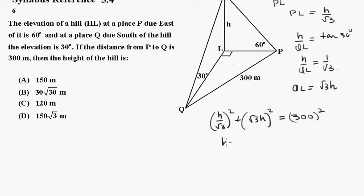This is H squared. This is H squared on 3, plus 3 H squared, equals 300 squared.